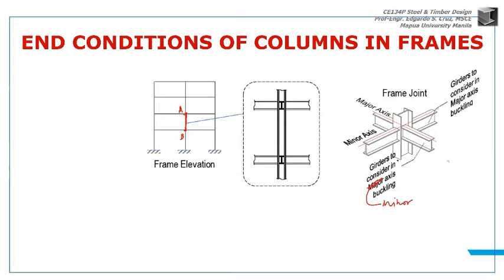This is what the joint detail becomes. So the column has girders at its joint. There's a girder here, and a girder there, and a column above it, right? Meaning, the effective length factor of the column would be dependent on how rigid that joint is.